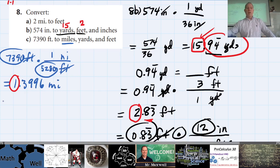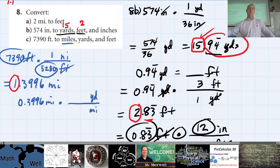The second calculation: take 0.3996 miles and find out how many yards that is. Put miles on the bottom and yards on top. Do you know the conversion factor between yards and miles? That should be on the sheet I gave you — how many yards are in one mile?